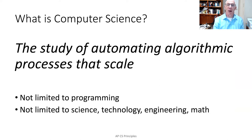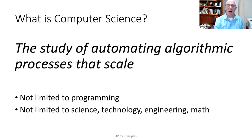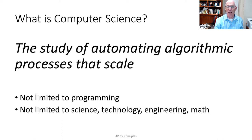To make sure that we understand something about how computer science is involved — not just technology — I'd like to use this as my working definition of computer science: it is the study of automating algorithmic processes that scale. The key aspects are automating, that's the programming part; the algorithmic processes; and the scale, because we really need to use concepts of computer science when we're addressing thousands or millions or billions or trillions of data elements and people. Computer science is not simply limited to programming, and it's not simply limited to science, technology, engineering, and math. It encompasses all areas of study in interesting ways.